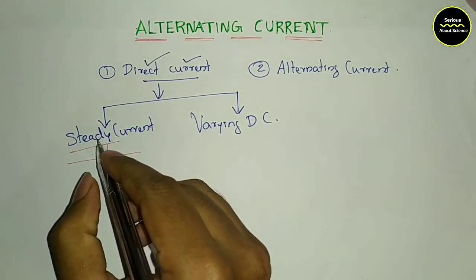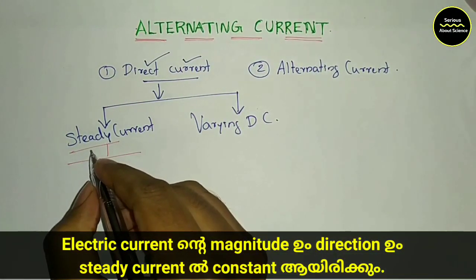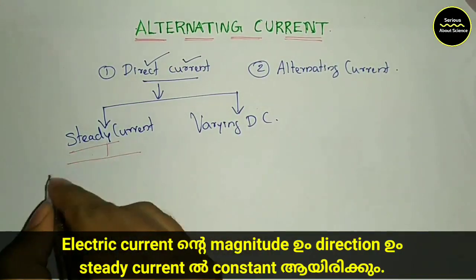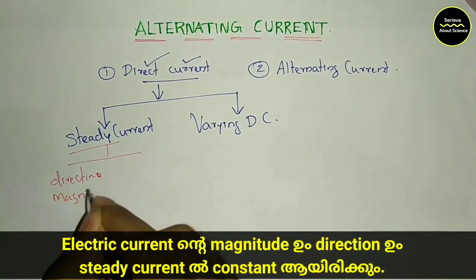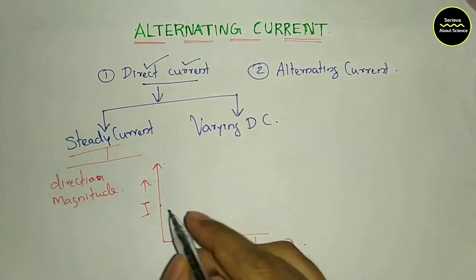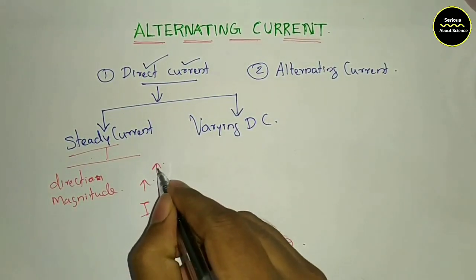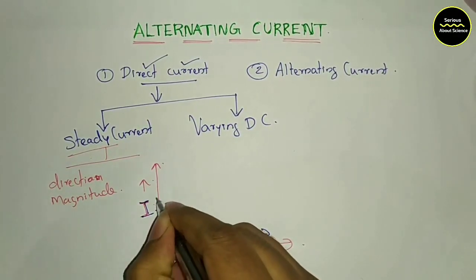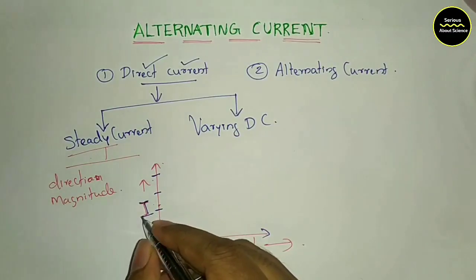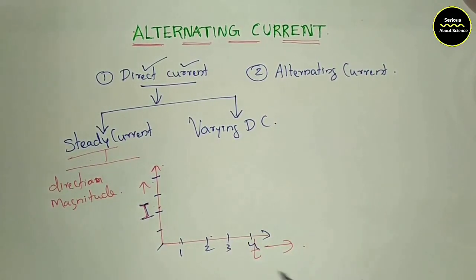Steady current is constant. The current direction is constant and the magnitude is constant. Now I can write the current on the x-axis and the current on the y-axis. When the current is 0A, 2A, 3A, 4A — the current is 3A — that means at 1 second, 2 second, 3 second, 4 second.